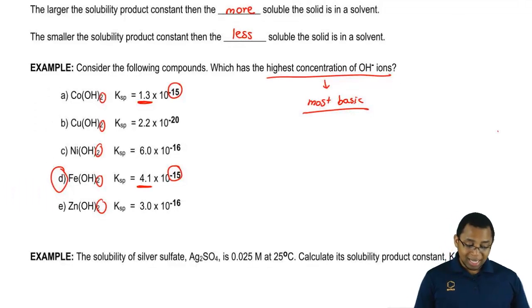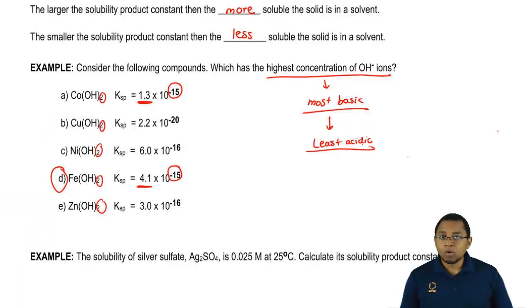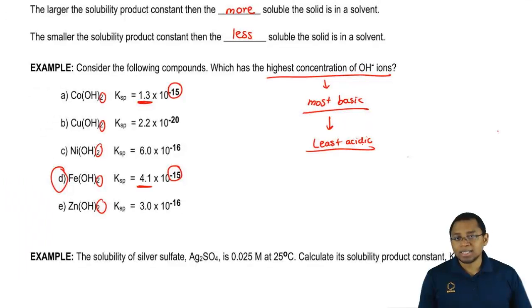I could have also said least acidic. Which of the following is least acidic? Which would have mean who has the lowest amount of H3O plus ions or who has the highest concentration of OH- ions. Different ways, three different ways to ask the same exact question.